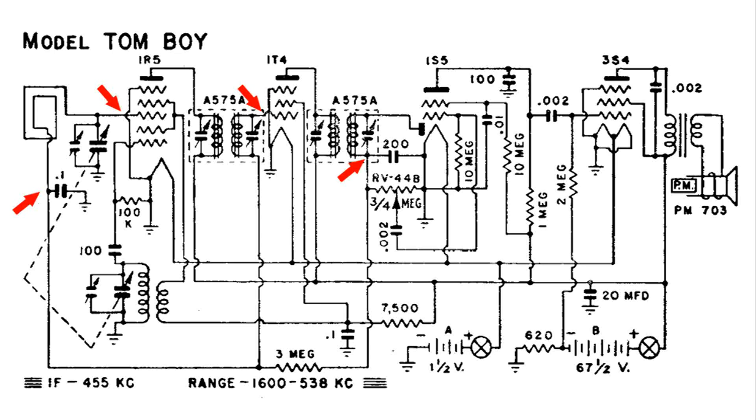So the more negative those grids, the less they amplify. So if you run into a strong station, there'll be more negative voltage there.